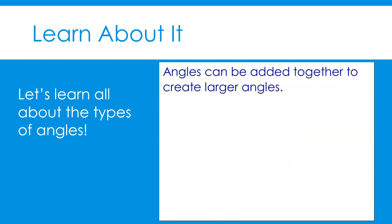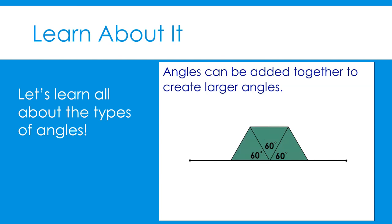Angles can be added together to create larger angles. These three acute angles of 60 degrees, shown in three congruent triangles, can be put together to create a straight angle of 180 degrees. The angle measures 180 degrees because it spans from one side of the shared endpoint to the other. To represent this with an equation, you could use repeated addition and write 60° + 60° + 60° = 180°.